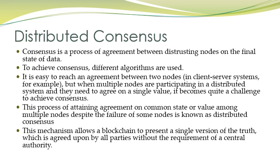For this purpose the consensus mechanism is used in blockchain technology. There are several algorithms for consensus in blockchain. The consensus mechanism allows a blockchain to represent a single version of the truth, agreed upon by all parties without the requirement of a central authority. The nodes in the blockchain will agree on some state of the machine, and if they agree, that block is inserted in the blockchain.